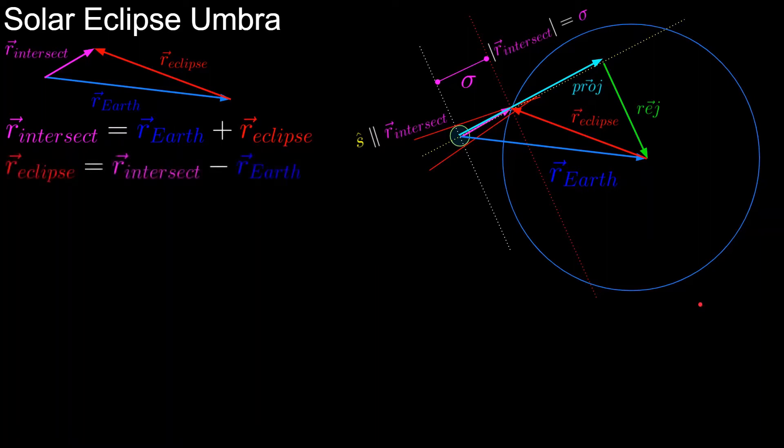We're going to rearrange the equation to isolate the eclipse vector, and we know that the r_intersect vector is equal to the unit sun vector times the scalar unknown sigma, and the magnitude of the eclipse vector is equal to the radius of Earth, since we're assuming a spherical Earth. So note that here we know the direction of the intersect vector but we don't know its magnitude, and for the eclipse vector we know its magnitude but not its direction.